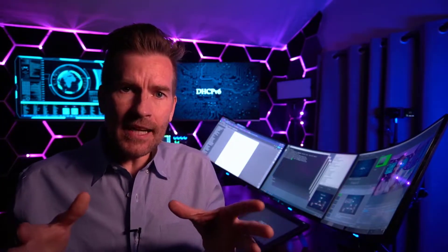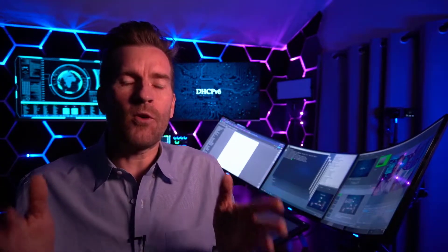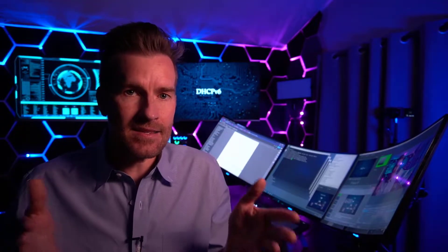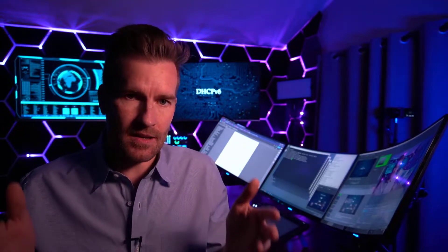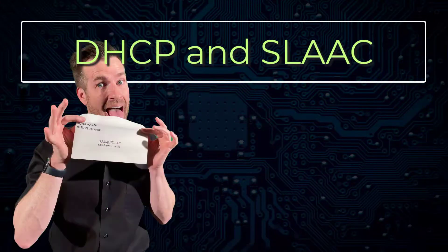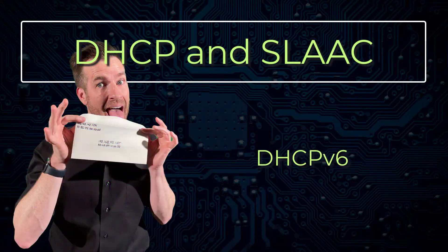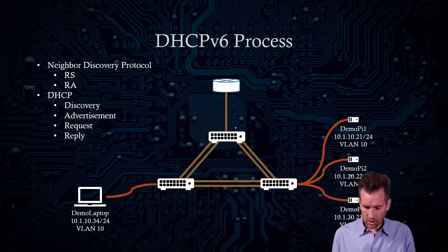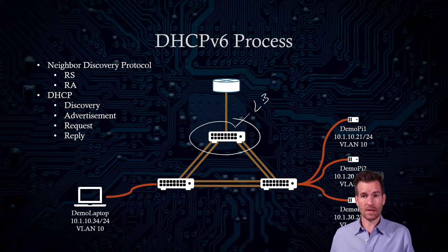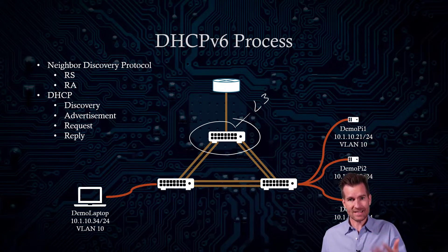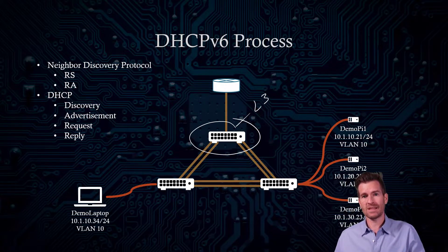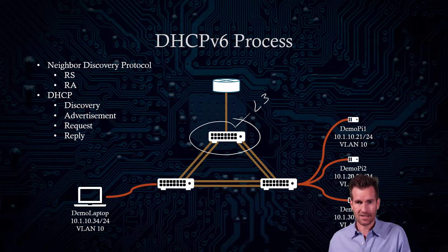Hey Technostuds! In this video, let's take a look at what it would look like if we wanted to utilize a DHCP version 6 server. In our network, our layer 3 switch is going to be our default gateway, and so it's actually what's going to be sending out our router advertisements.